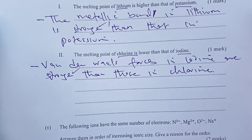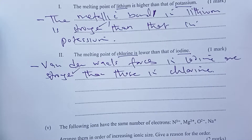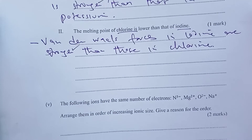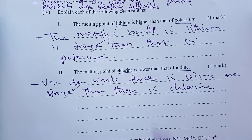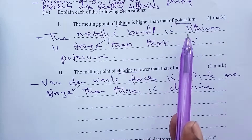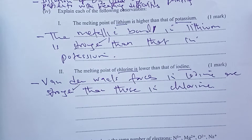Someone could also write that iodine has more Van der Waals forces than chlorine, meaning there are more, which raises the melting point. Another person could say iodine has stronger forces of attraction than chlorine. For lithium and potassium, we compared the metallic bonds.